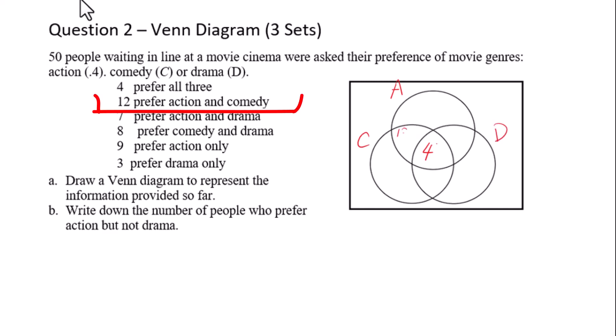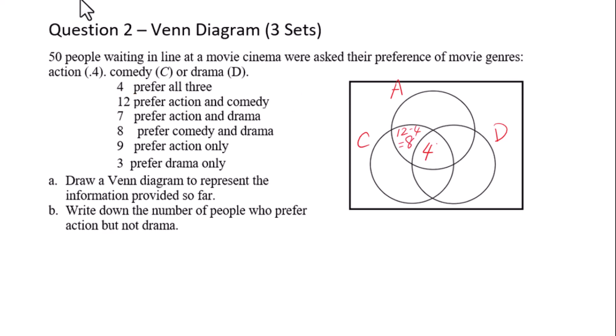12 prefer action and comedy, so 12 minus 4 equals 8. 7 prefer action and drama, so 7 minus 4 equals 3. 8 prefer comedy and drama, so 8 minus 4 equals 4.